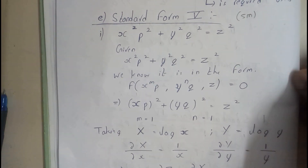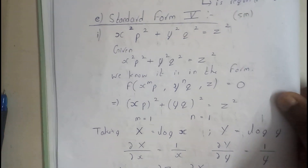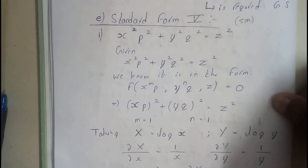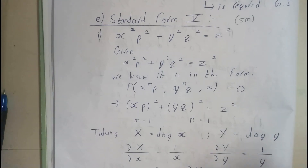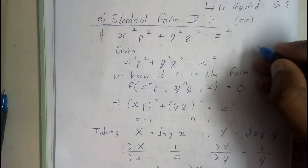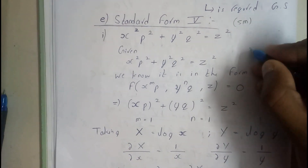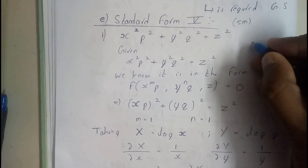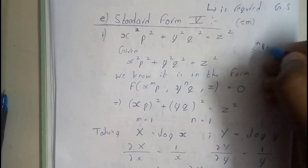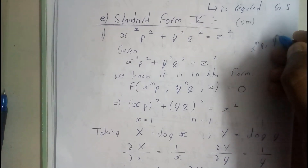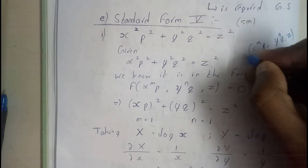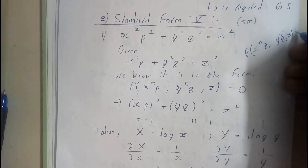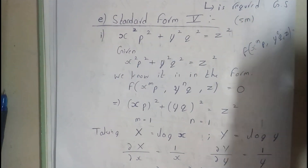Hello guys, we are back with our next tutorial. In this tutorial we will be going through Standard Form Phi. Standard Form Phi is in terms of x^m · p, y^n · q, z equals to 0.